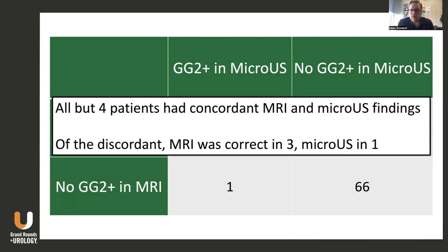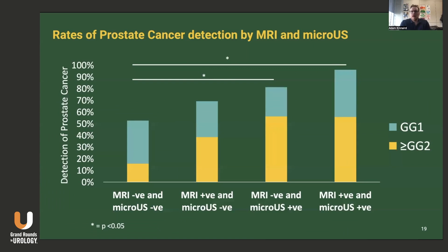Of the discordant patients, MRI was correct in three and micro-ultrasound was correct in one. When looking at the double positive or double negative effect, when both micro-ultrasound and MRI are negative the rate of upgrading is significantly lower at about 15%, compared to about 50 to 60% when both are positive. When the two imaging results differ, micro-ultrasound appears to be providing more or more correct information about whether someone has Gleason grade group 2 or higher cancer.